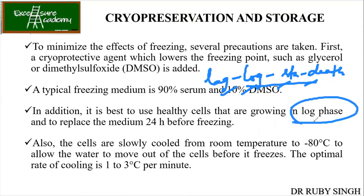Initially, what you are going to do is: first take the culture, do the subculturing, and get the culture in your log phase. Then use trypsin to remove the attachment of the cells from the plate. Take them, wash with PBS, centrifuge it, add serum, then add 100 microliters of DMSO. Finally, take that vial and put it into the liquid nitrogen.